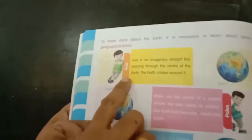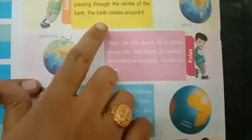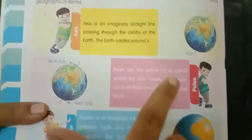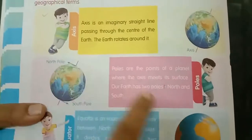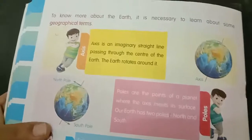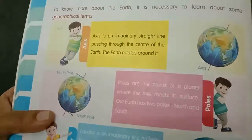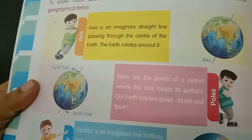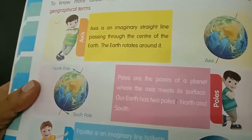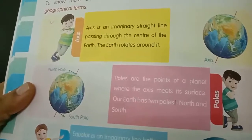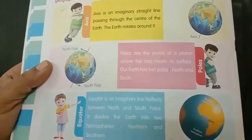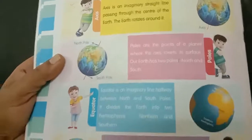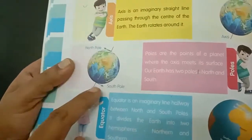They are: axis — an imaginary straight line passing through the center of the earth. The earth rotates around it. Second one, poles — the points of the planet where the axis meets its surface. Our earth has two poles: North Pole and South Pole.